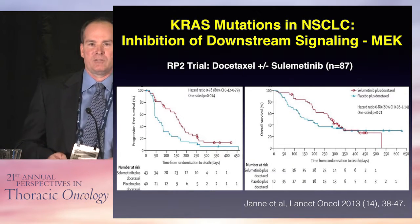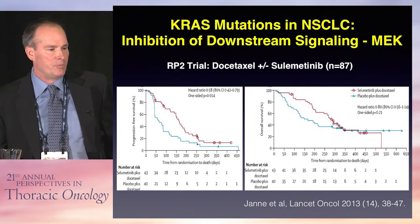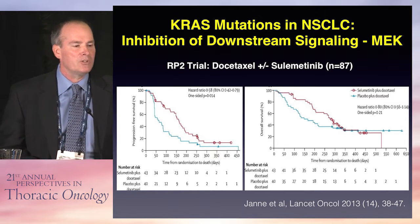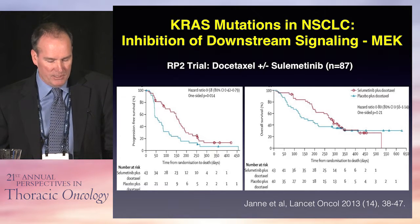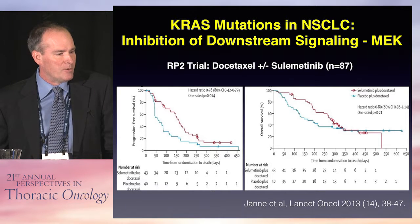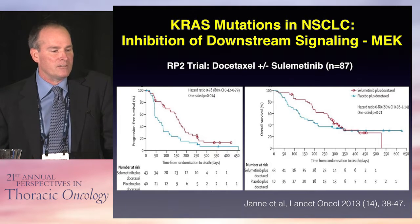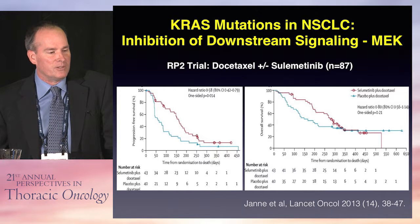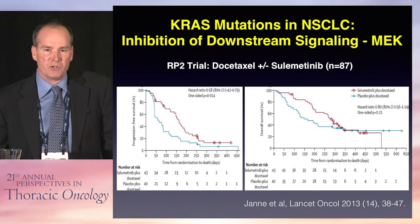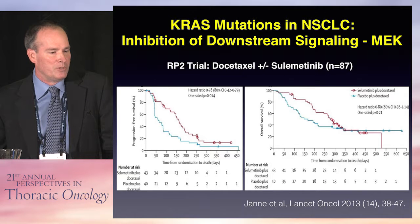KRAS does cause downstream signaling, and those pathways are ripe for targeting. There was a randomized phase II trial of docetaxel with or without the MEK inhibitor selumetinib. This study showed what looked promising — a progression-free survival benefit — but unfortunately did not turn out to be an overall survival benefit. On the graph on the right, it numerically looks improved and the hazard ratio was 0.8, but statistically was not significant with a p-value of 0.21.